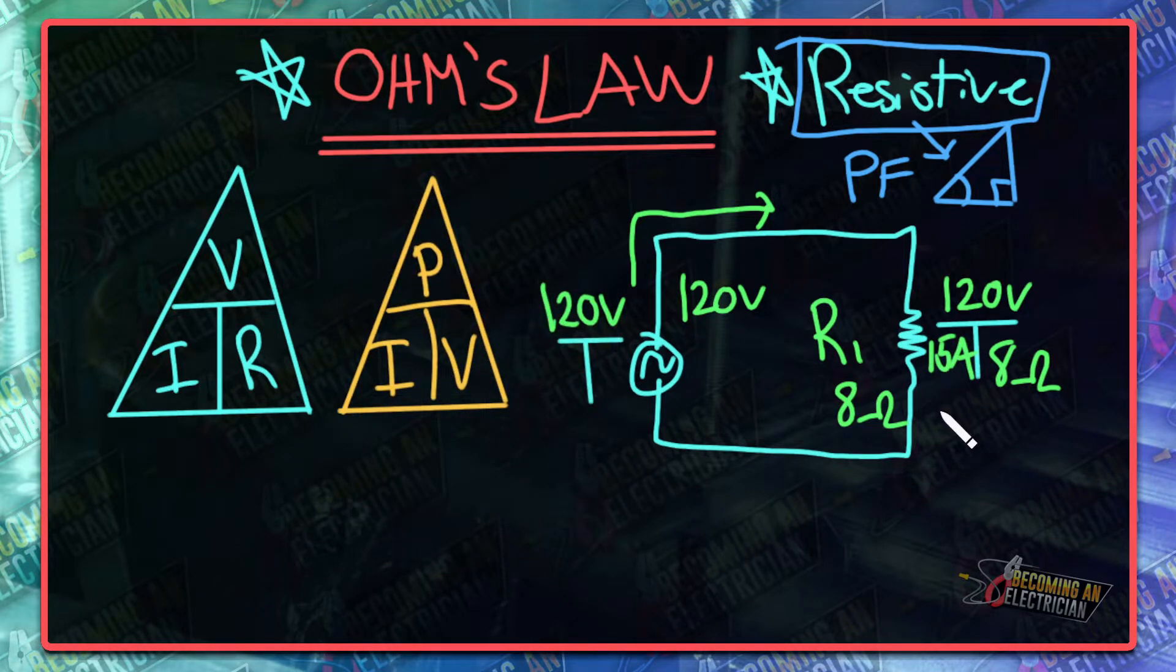Because this is a basic circuit, our current is going to remain the same. We're going to have 15 amps here, and that's why we'll also have 8 ohms. I'm just following the basic triangle.